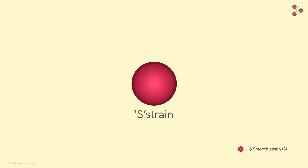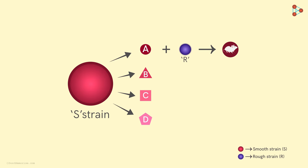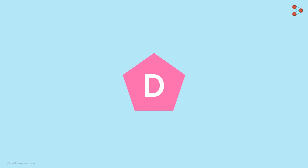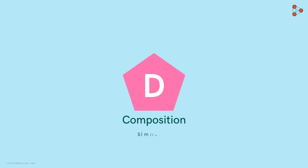Let's say the smooth strain cell had four components — A, B, C, and D. They mixed component A with the rough strain and injected it in a live mouse. Similarly, they mixed all the other components individually with the rough strain and injected the mixtures into different mice. What they found was that only one of those components was effective in transforming the rough strain — it was the case in which the mouse died. The conclusion was that component D transformed the R strain. They isolated this component from the heat-killed strain and tested it further. On chemical analysis, they found that the molecules had a chemical composition similar to that of DNA.